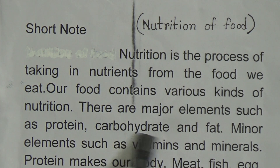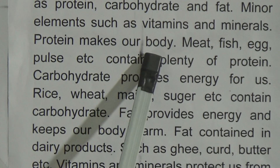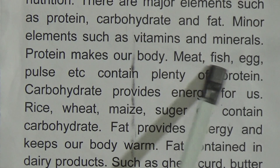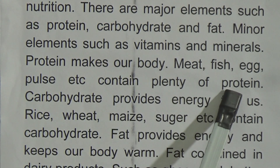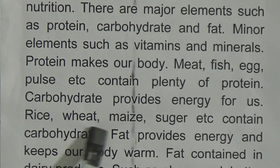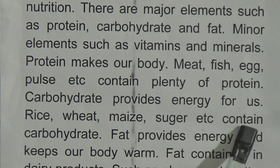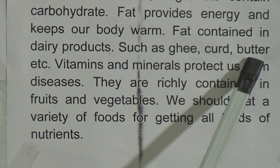There are major elements such as protein, carbohydrate, and fat, and minor elements such as vitamins and minerals. Protein makes our body — meat, fish, egg, and pulse contain plenty of protein. Carbohydrate provides energy for us — rice, bread, and sugar contain carbohydrate. Fat provides energy and keeps our body warm — fat is contained in dairy products such as ghee, curd, and butter.